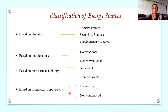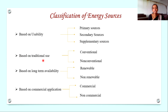Now we have to study the classification of energy resources. The energy sources can be classified in many ways. The first classification is based on usability — that is, how much processing these resources require before they can be converted to a usable form. Based on that, resources are classified into three types: primary sources, secondary sources, and supplementary sources. The second classification is based on traditional use — whether they are traditionally used or introduced recently — giving us conventional and non-conventional. The third classification is based on long-term availability — whether that resource is available for a long period of time or will it get depleted.